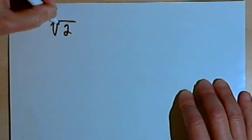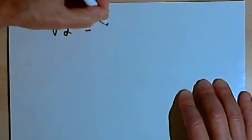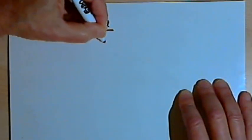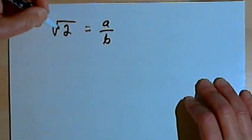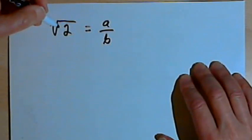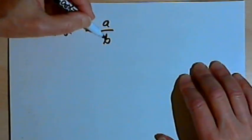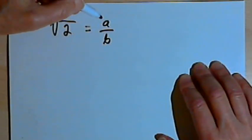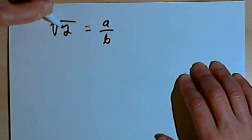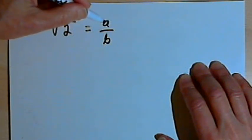So I'm going to write the square root of 2 equals a over b. Now remember, a rational number is a number that I can write as the ratio of two integers, or in other words, it's a number I can write as a fraction. So I'm saying that the square root of 2 equals a over b.